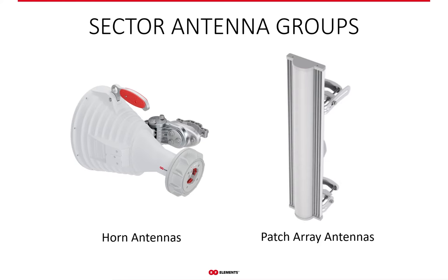First, why is an antenna called a sector? Because its beam width in the azimuth plane is not 360 degrees — meaning it's not an omni — but only a part of the whole circle is covered, and this part is called a sector. So 'sector' is not an inherent quality of patch array antennas; it has to do with the beam width in the azimuth plane.